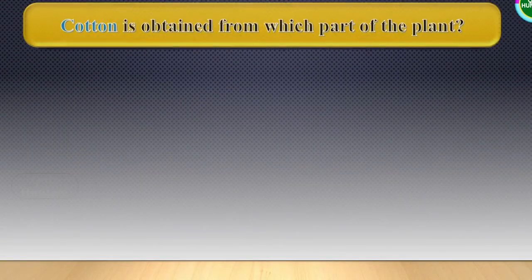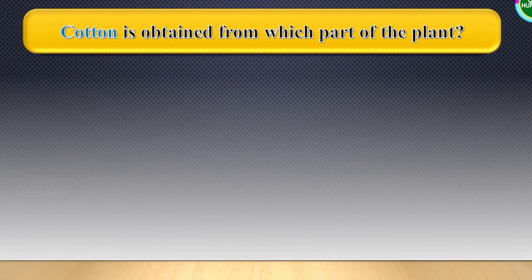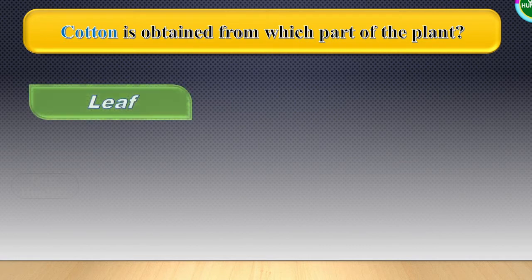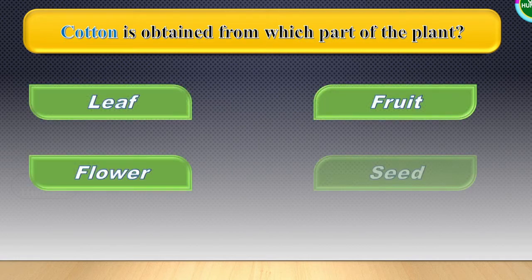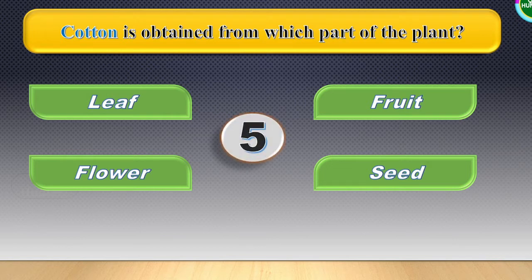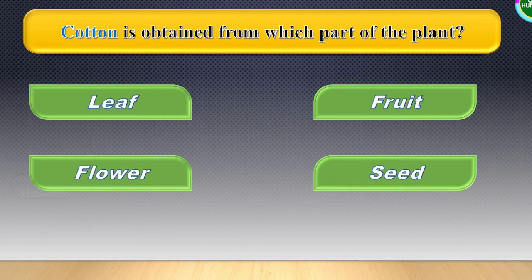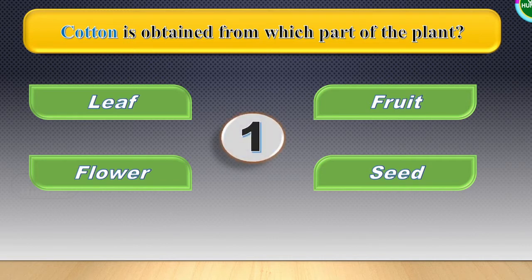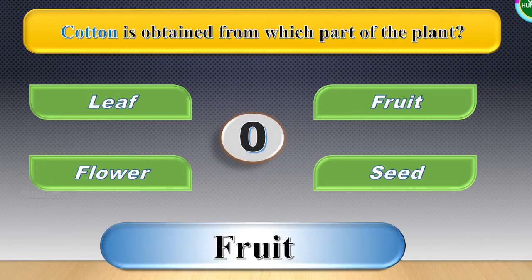Next question: Cotton is obtained from which part of the plant? The options are visible in the screen. Your time starts now. The correct answer for this one is fruit.